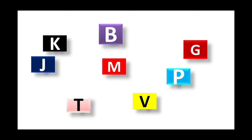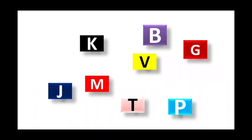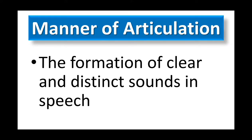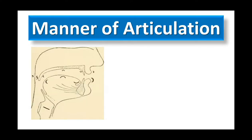We all know that when we speak or communicate, various sounds are created, but most of us don't know how these sounds are formed or created. So it's very important for us to know the way these sounds are created, and that way is known as manner of articulation. Manner means the way, and articulation means the formation of clear and distinct sounds in speech. Manner of articulation describes how closely the articulators — meaning organs of speech — interact with each other to create a particular sound.